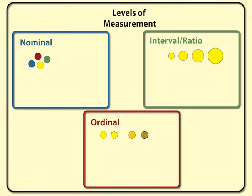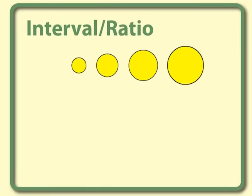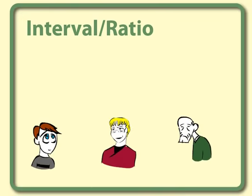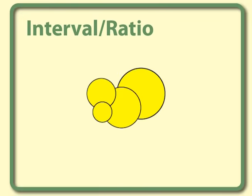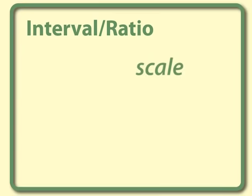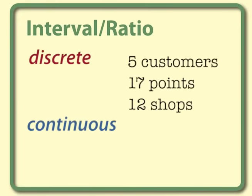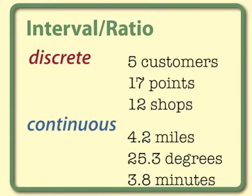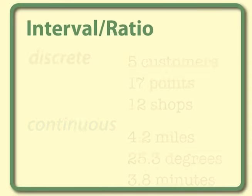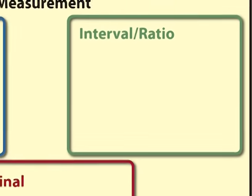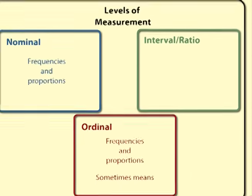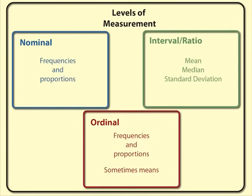The most precise level of measurement is interval ratio. This level includes things that can be measured rather than classified or ordered, such as number of customers, weight, age, and size. Interval ratio data is also known as scale, quantitative, or parametric. It can be discrete, with whole numbers, or continuous, with fractional numbers. Interval ratio data is very mathematically versatile. The most common summary measures are the mean, the median, and the standard deviation.